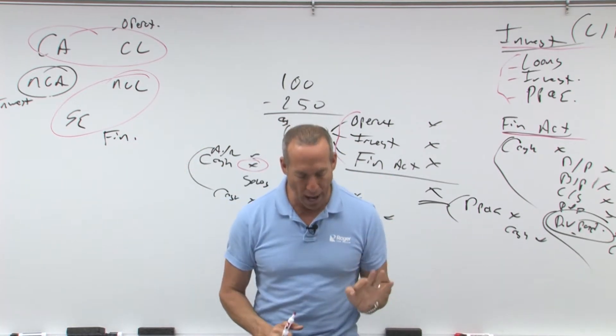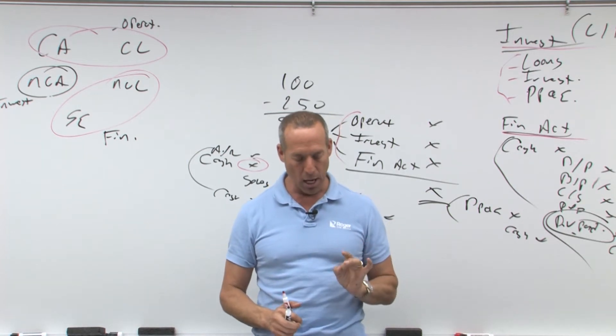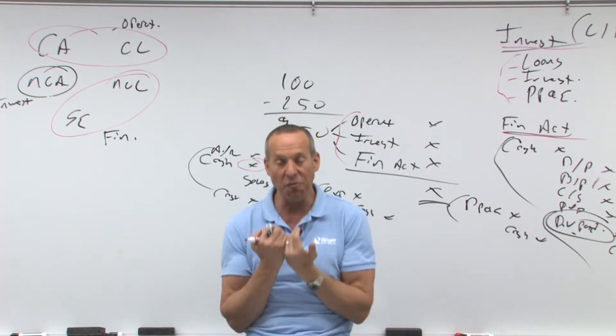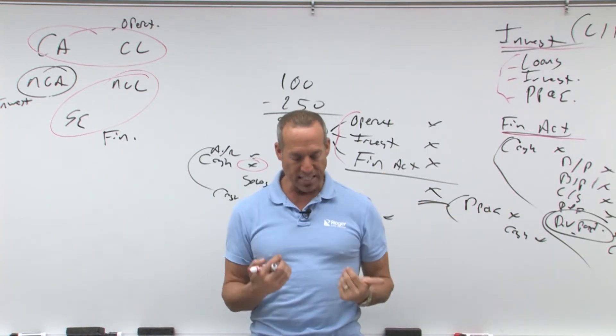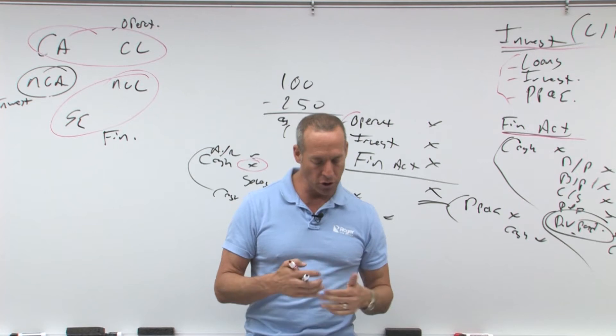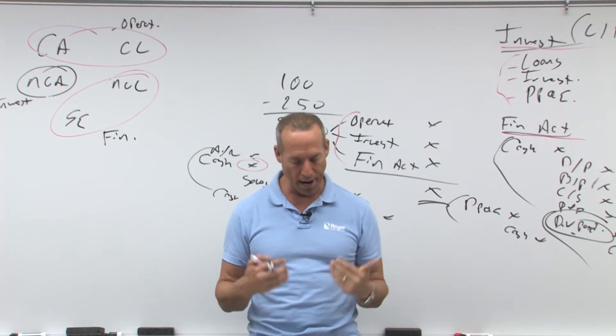Then it says net cash provided or used by operating. Provided is positive, inflow. Used is outflow. In other words, we spent more money than we brought in. Investing activities, net cash provided or used. And then financing activities, provided or used.